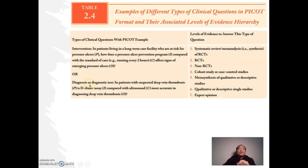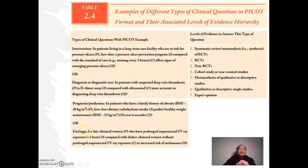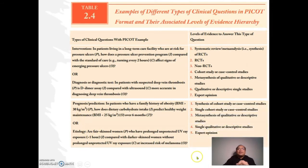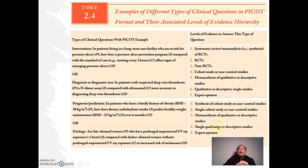For prognosis or etiology type questions, the sequence of evidence to look for is: first, a synthesis or cohort study; then a single cohort study; followed by metasynthesis of qualitative and descriptive studies; then single qualitative or descriptive studies; and finally expert opinion. All of this will be discussed further in the second stage of EBP, which is the access stage.